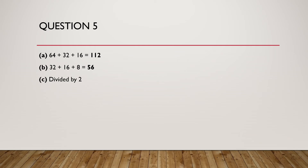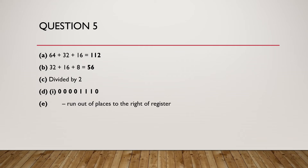Part D: The original number is shifted three places to the right. Show the new binary number. The equivalent denary value is 14. Describe the problem that could occur if the original binary number is shifted five places to the right: you run out of spaces to the right of the register, so we are going to lose precision.